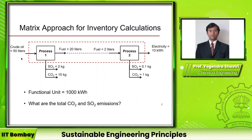Before going ahead with the calculations, let me briefly connect this to our terminology discussions. This is a product system with two unit processes — process 1 and process 2 — and the red line is the system boundary. SO2 and CO2 are the two emissions. Crude oil is a resource used and therefore is not considered a product flow — it is a natural resource. The product flows are first the fuel, which is produced by process 1 and consumed by process 2, and second electricity, which is the output of process 2. Given this information, let us see how we can do the calculations.